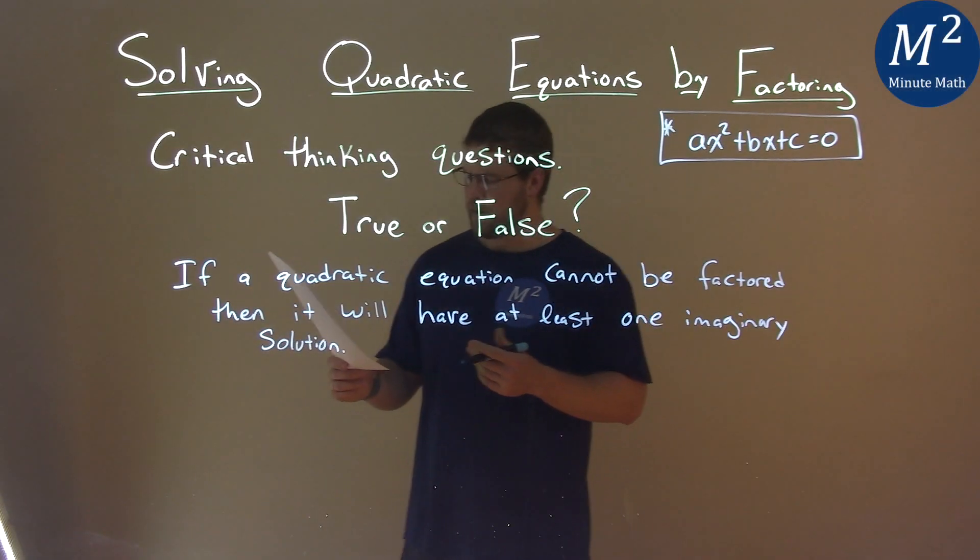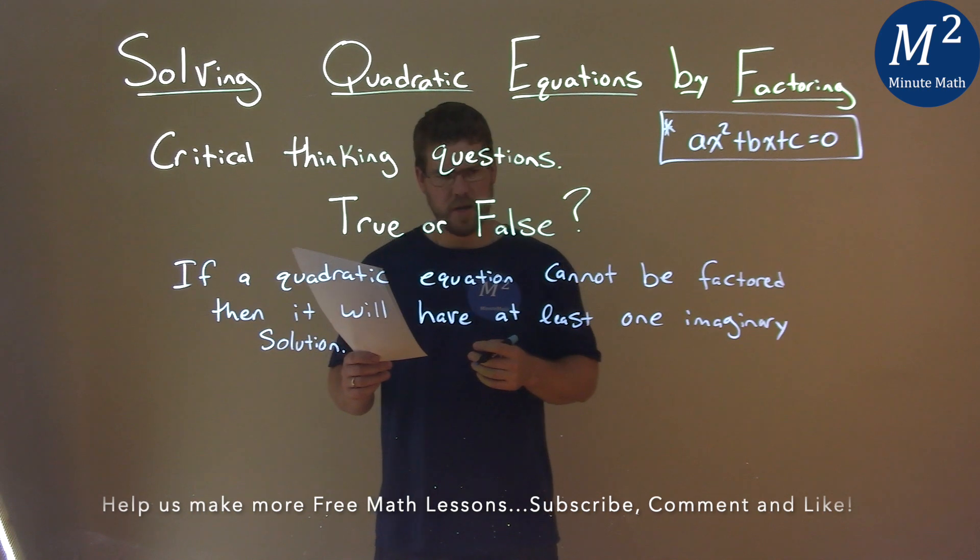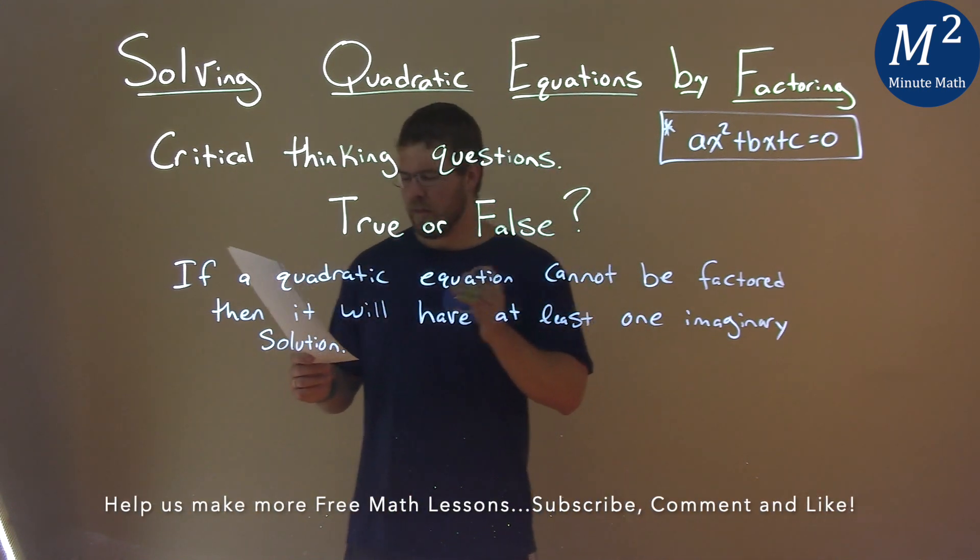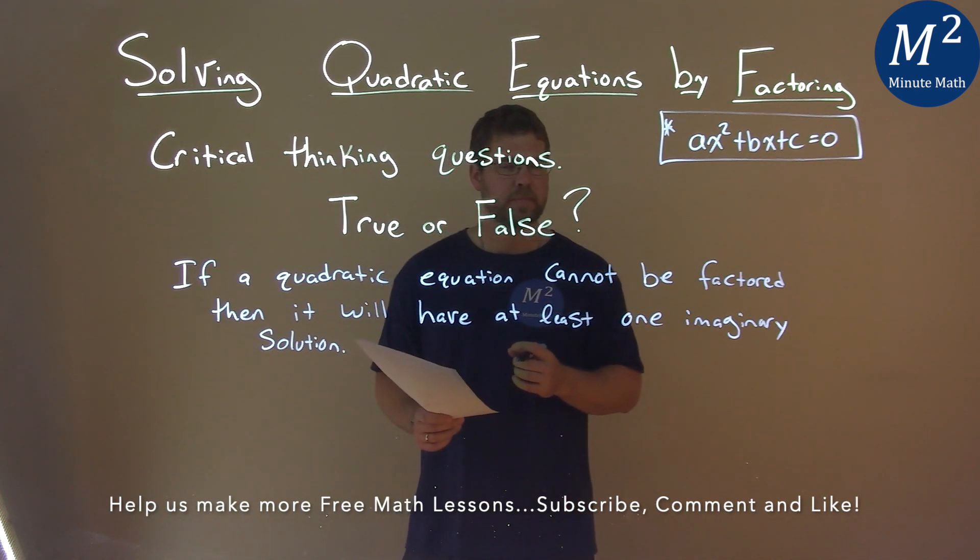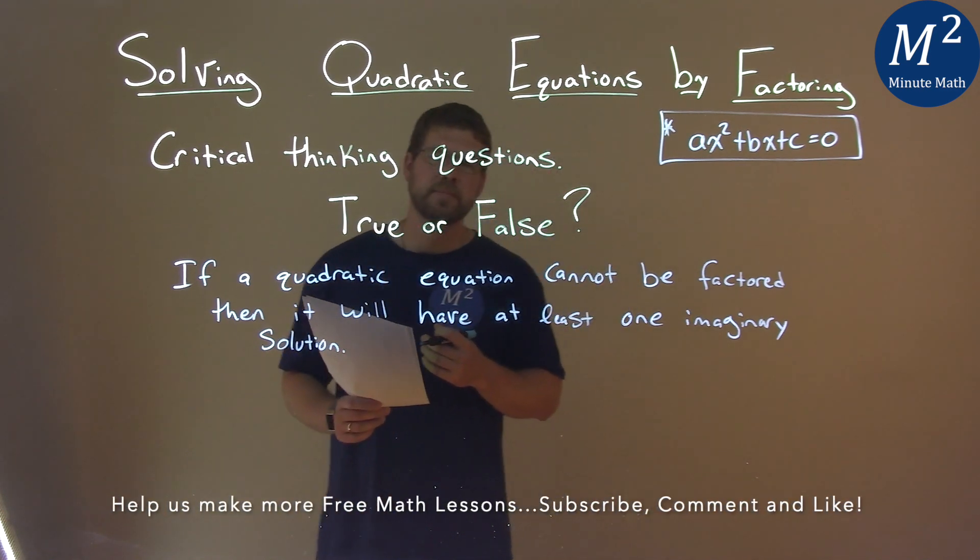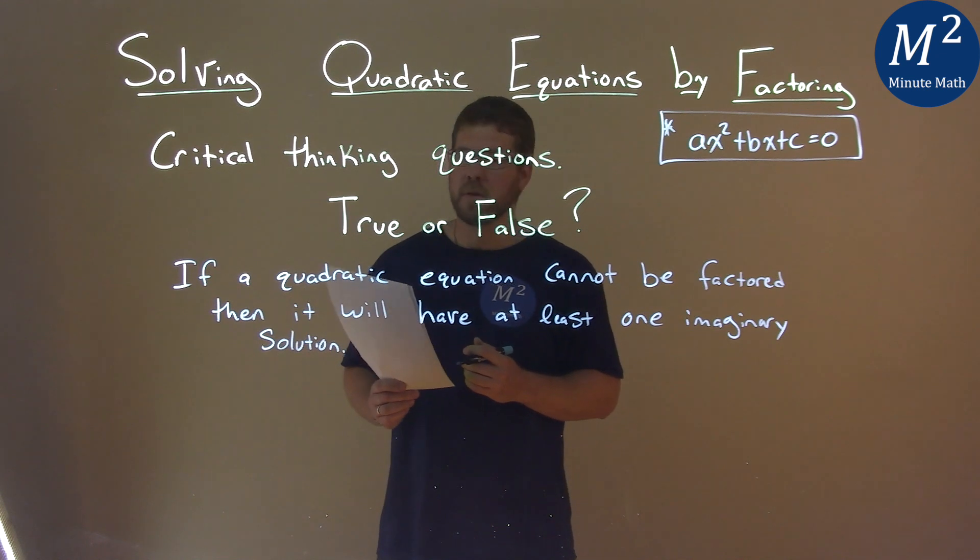We're given this problem right here. If a quadratic equation cannot be factored, then it will have at least one imaginary solution. Think about that for a moment. Let me know what you get in the comment section down below.